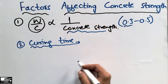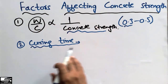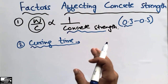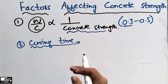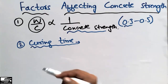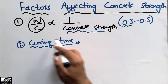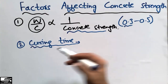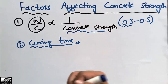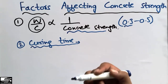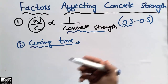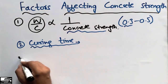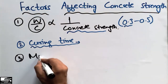Without proper curing time, the concrete strength is not as much as we designed. So we should take care of the curing time and provide sufficient curing time for the concrete so that it achieves the desired strength. The third factor which affects concrete strength is the mixing time of the concrete.